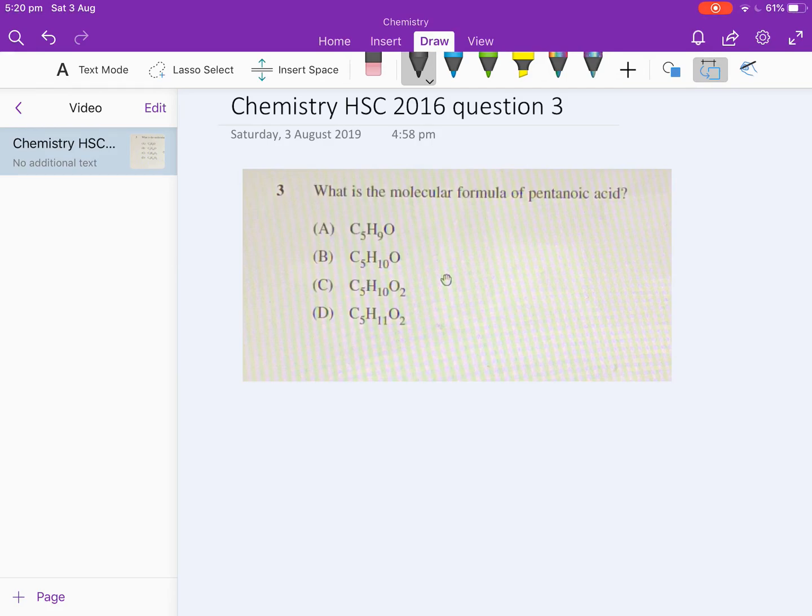So to answer this question, I need to draw or work out the structural formula. Pentanoic, pent means five carbons.